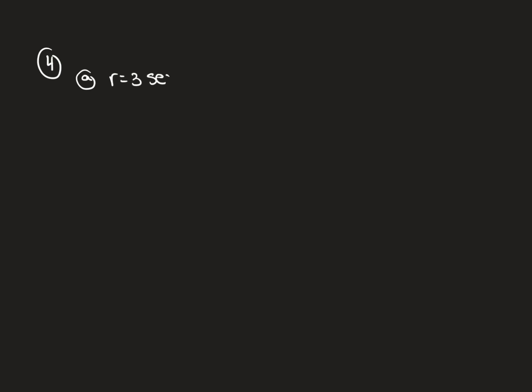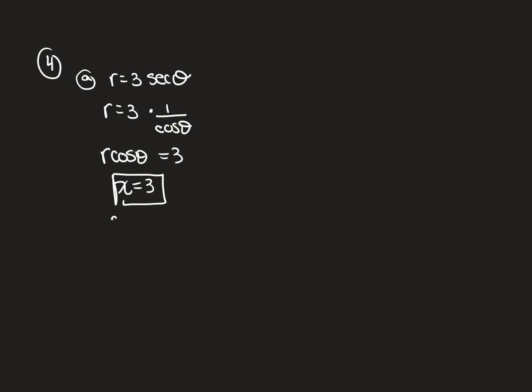Problem 4 asks us to convert polar equations to rectangular and identify the shape. For Part A, r = 3·secθ. Rewriting: r = 3·(1/cosθ), so multiply both sides by cosθ to get r·cosθ = 3. Since r·cosθ = x, we have x = 3, which is a vertical line.